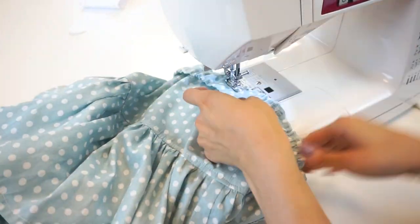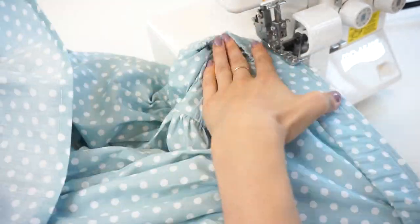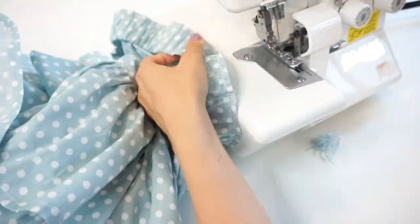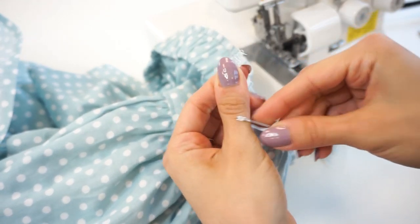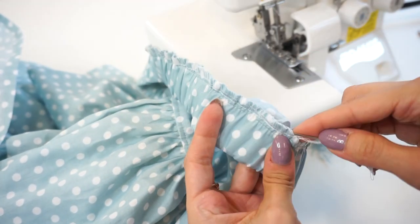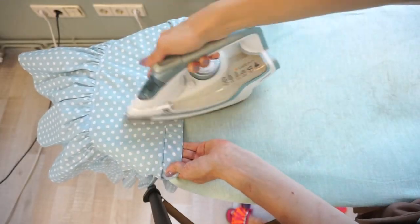After you have sewn on the waistband, neaten the seam. Again I will be hiding the loose ends of the serger seam inside the seam. Press the seam downwards.